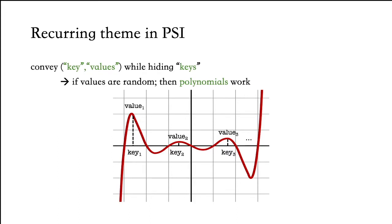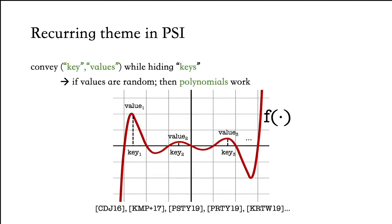In PSI and related applications that we consider, the values associated with the keys are uniformly random, so they end up using polynomials for their task of conveying key-value pairs while hiding keys. Polynomials have the property that when you interpolate through values that are random, the resulting polynomial f is uniformly random and ends up hiding the special keys for someone evaluating it. We see polynomials used to obliviously store key-value pairs in a host of PSI papers.